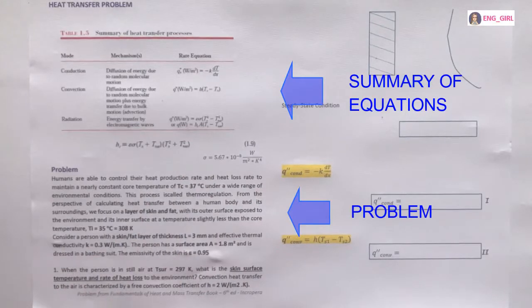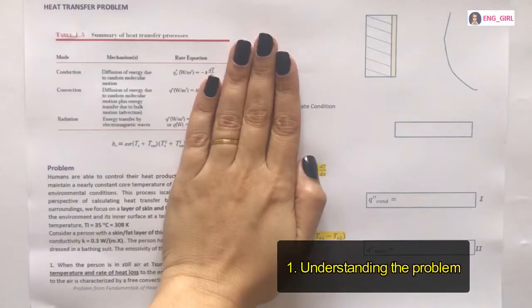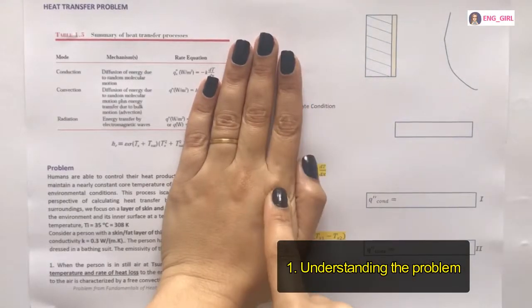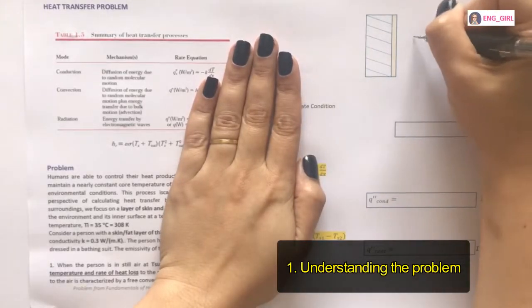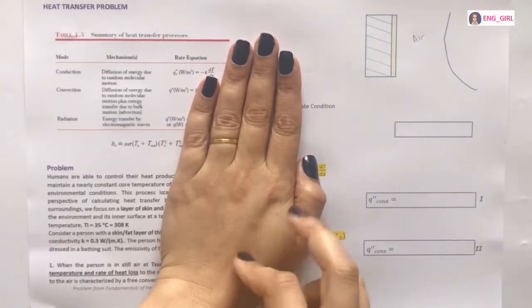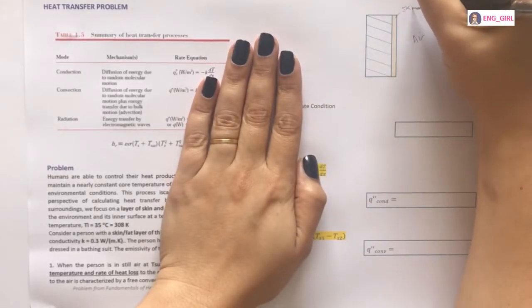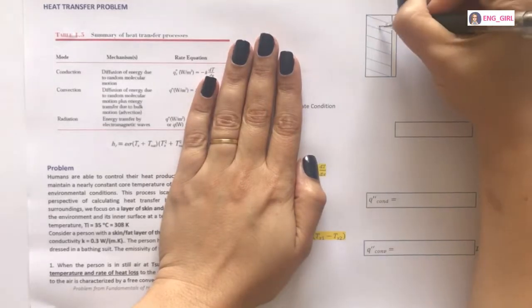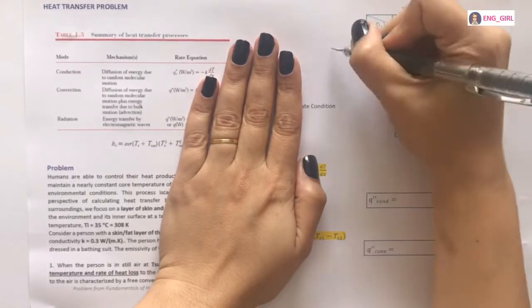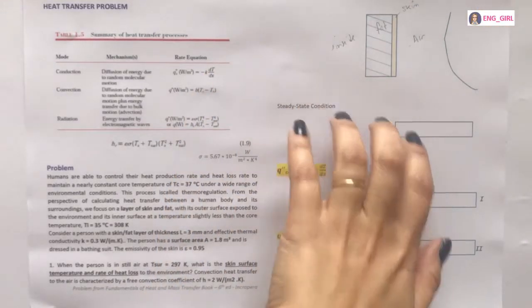Here is the full problem, but I highlighted the essential data to solve the problem. So, look at your finger, you are going to see air around it, you can see a skin, you can imagine a fat and the inside. Ok? This is our exercise.